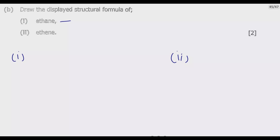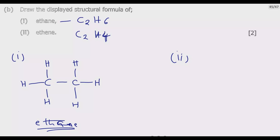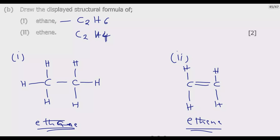Now drawing the displayed structural formulas: Ethane is C2H6 — it is saturated, so carbon is surrounded by hydrogen atoms with single bonds only, giving six hydrogens total. Ethene is C2H4 — it is unsaturated and has a double bond between the two carbon atoms, which is the key feature of an alkene. Once you add the four hydrogen atoms around the double bond, the structural formula is complete — that's the two-mark question.